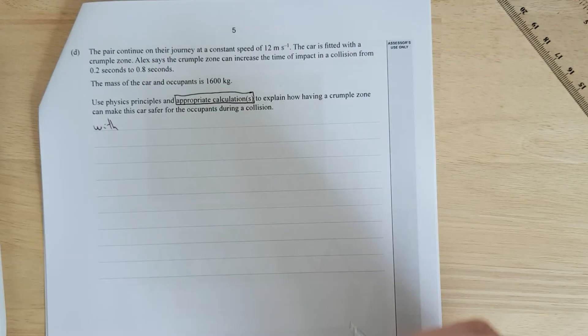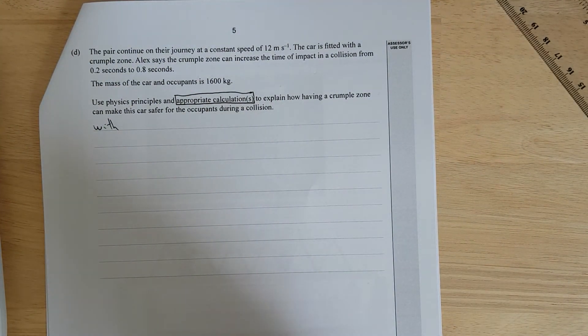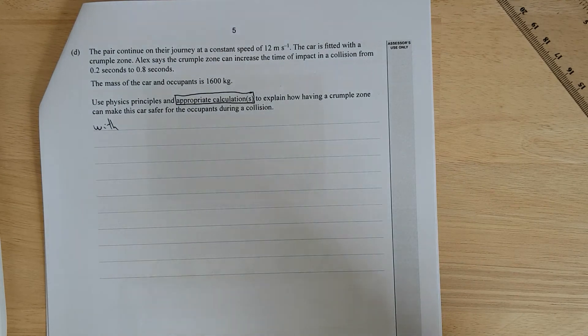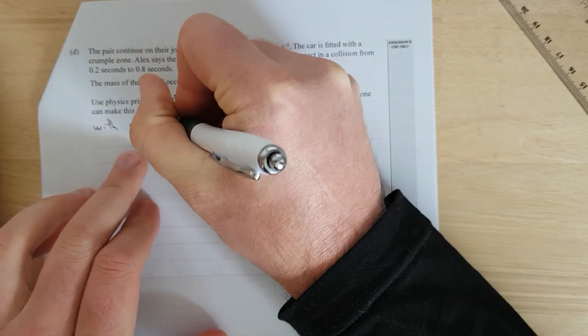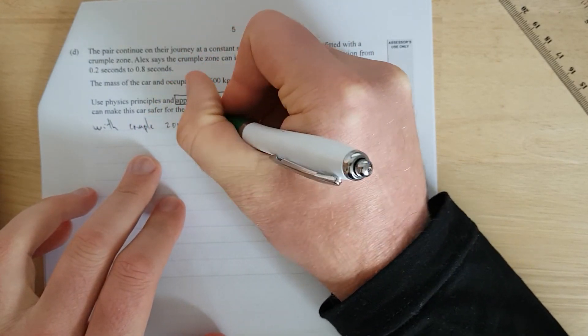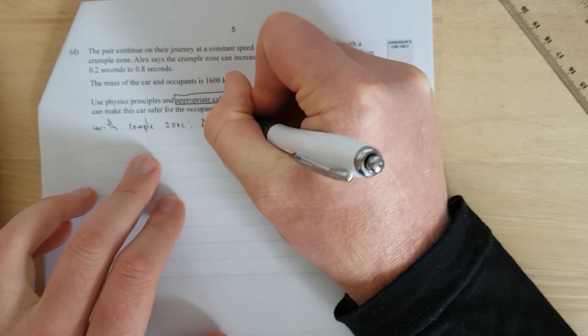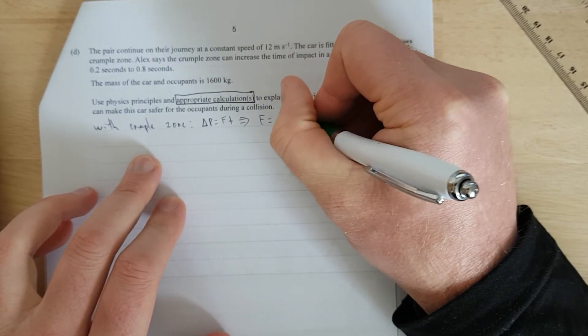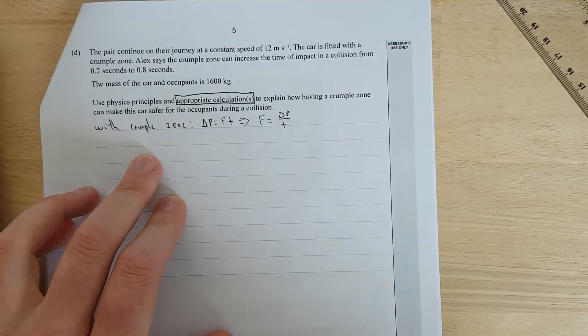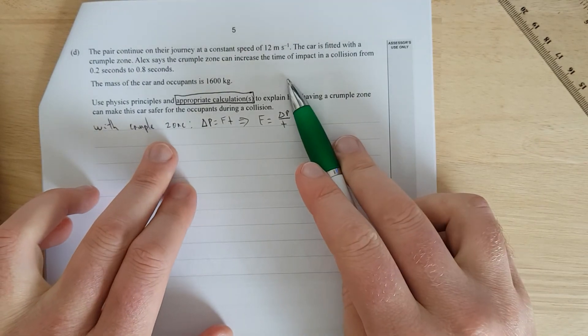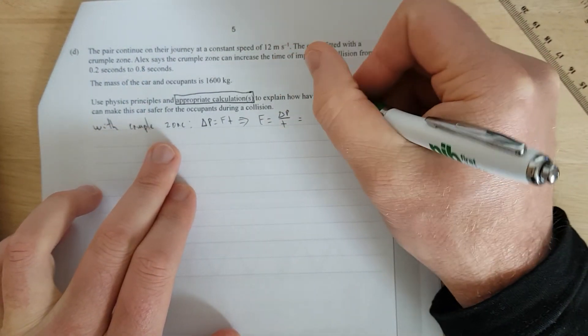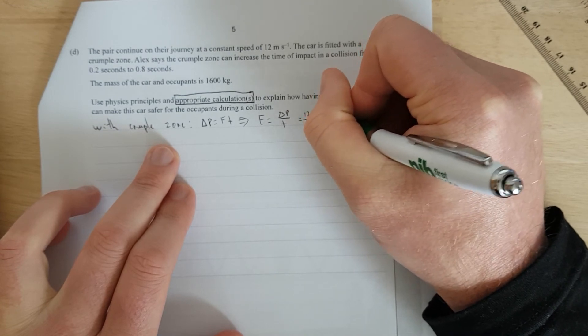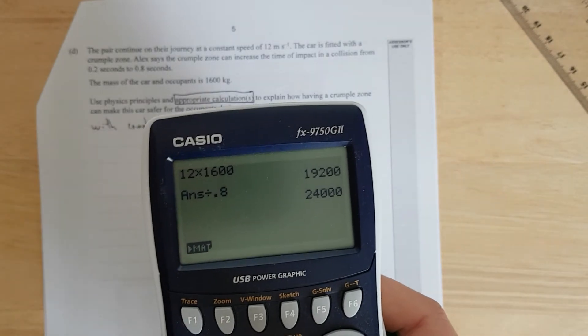So we'll say with crumple zone. We're going to try and find the force acting on the car. So, we know the mass, we know the velocities, we know the momentum, and we know the times, so we'll be able to figure out the force. With crumple zone, I'll put the formula: change in momentum equals F times force times time. In other words, force is equal to change in momentum over the time of the collision. So, that is going to be equal to, with the crumple zone, it is going to be 0.8 seconds. The change in momentum is going to be the same regardless. So, we're going to have 12 times 1600, divided by 0.8, and that is going to be equal to 24,000.